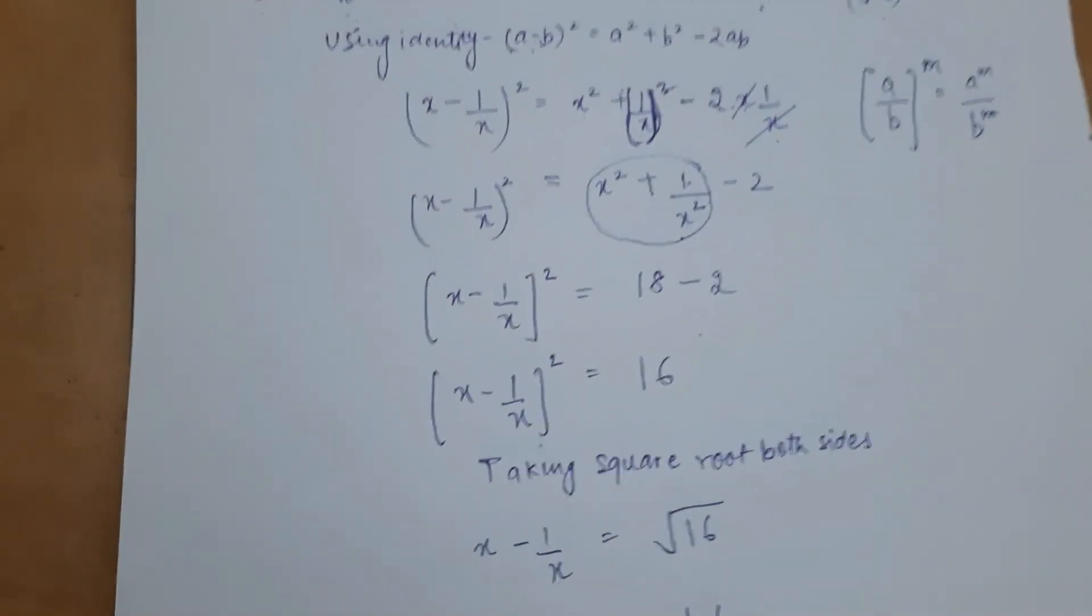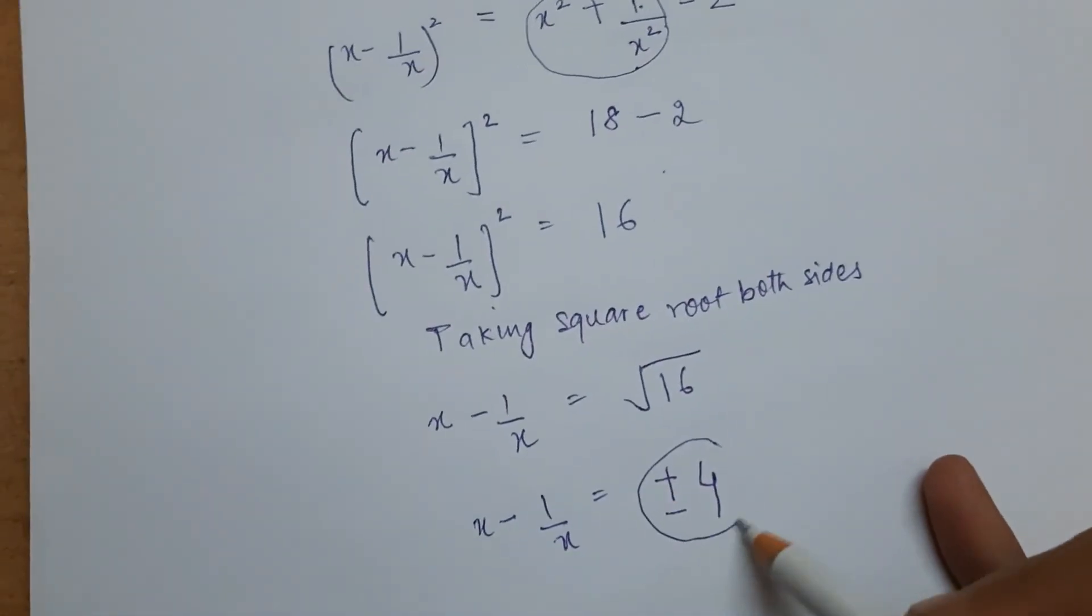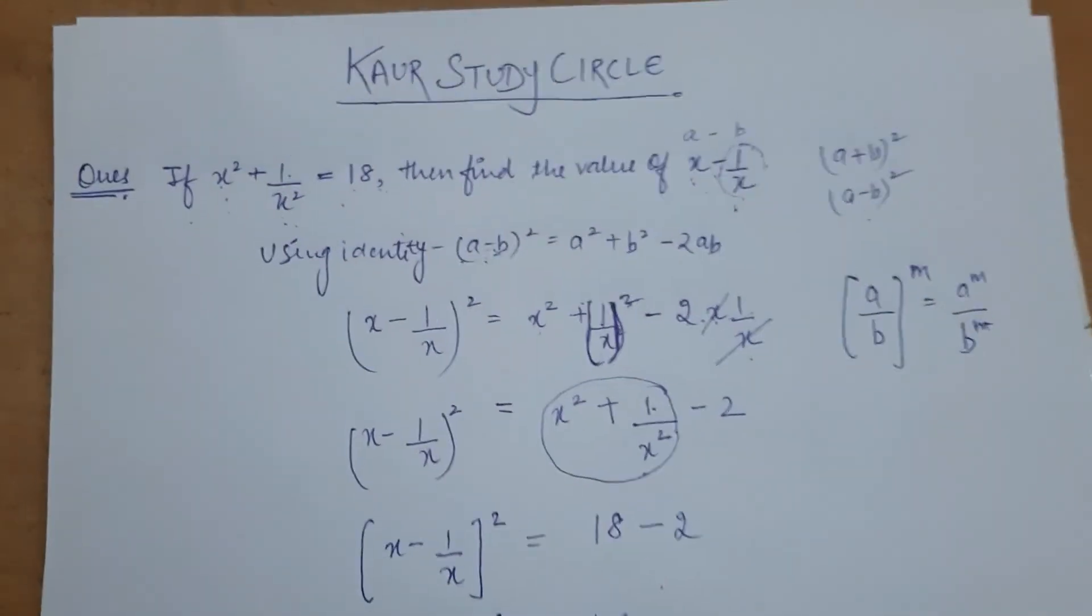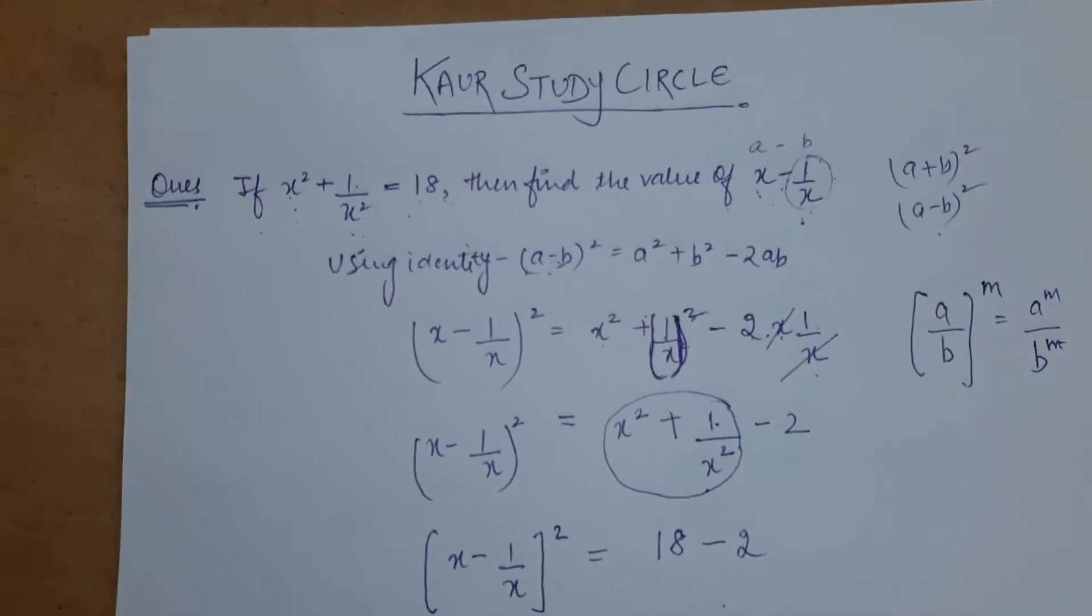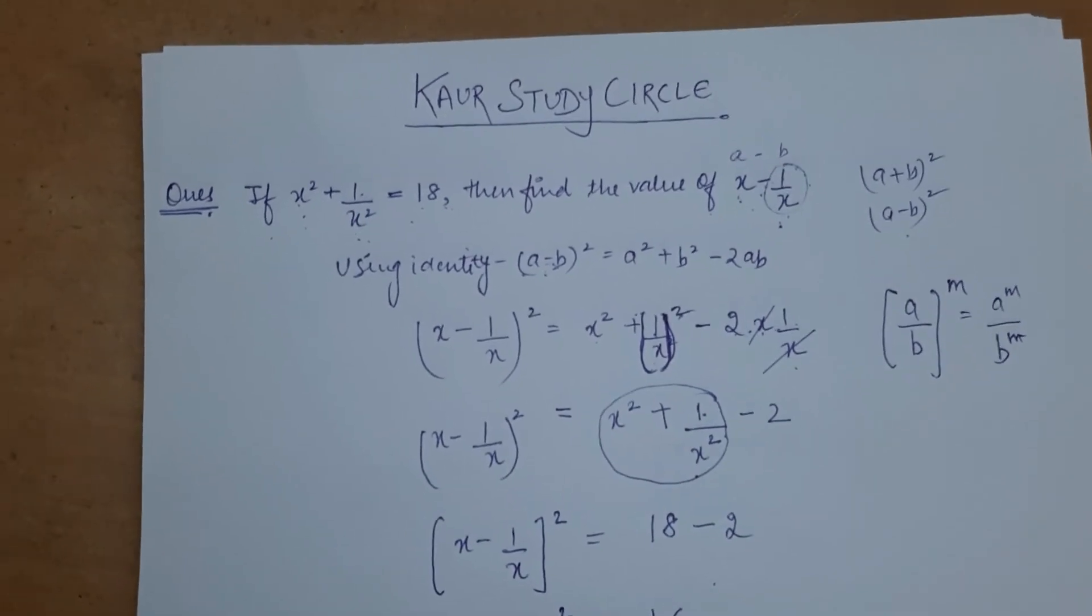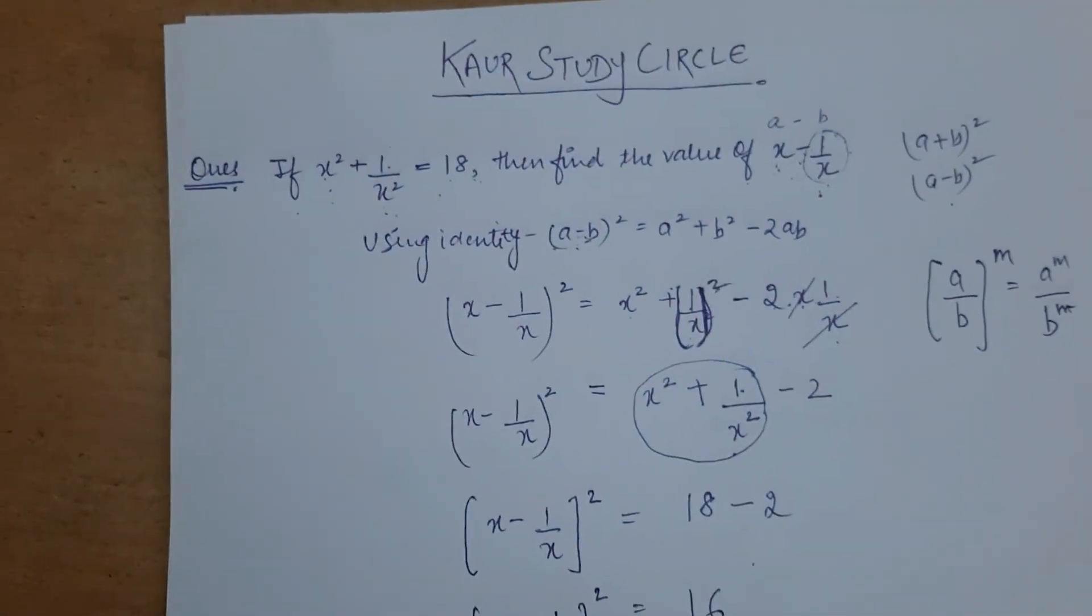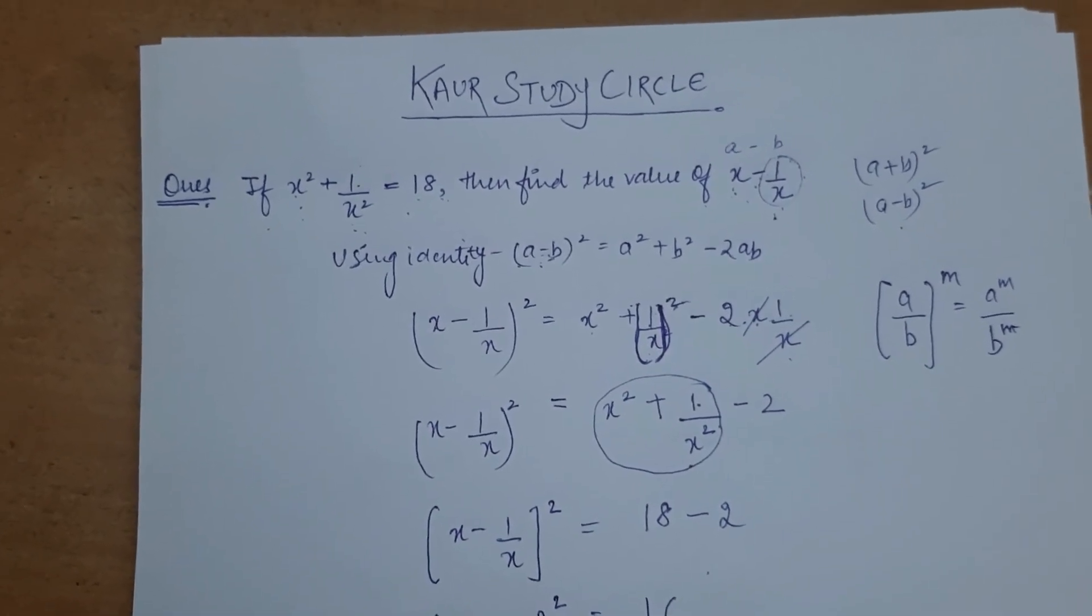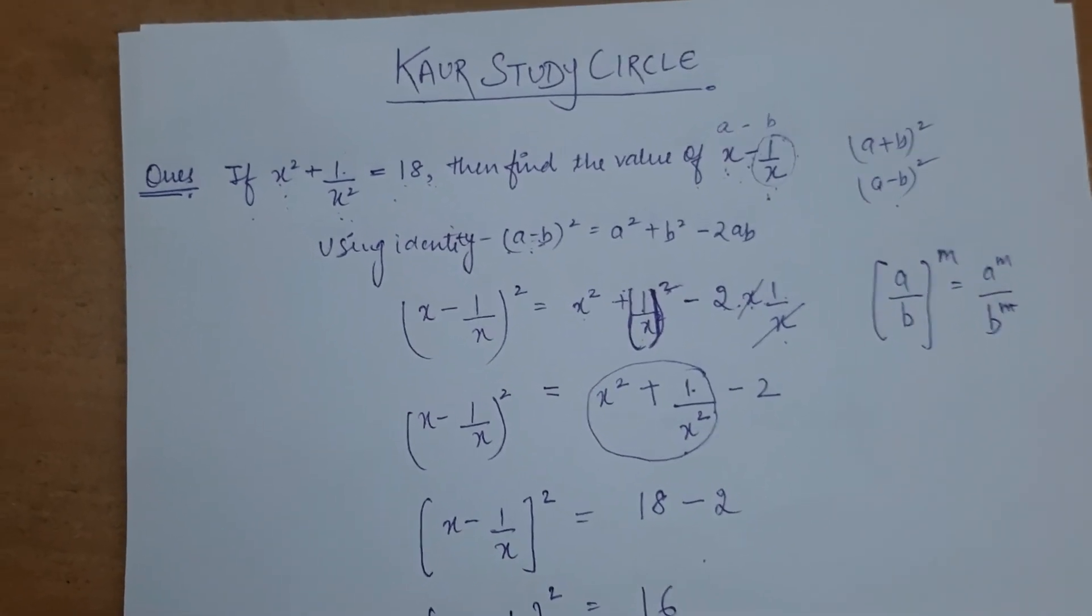Now we got the value the question was asking for, which is to find the value of x minus 1 by x, and the value is plus minus 4. The question is very easy, just keep in mind which identity to apply and how to apply it. Consider this as an important question as these kinds of questions come up in exams in polynomials. If you find any difficulty in this question or any other, you can comment that question in the comment box and you will surely get the video of those questions. I hope you like the video, so please do like, share and comment. Thank you so much, bye.